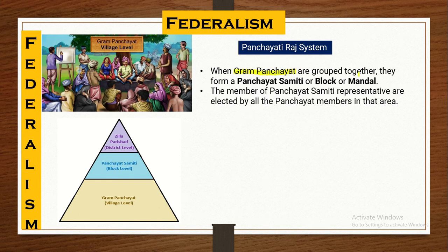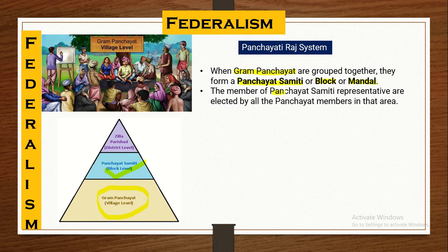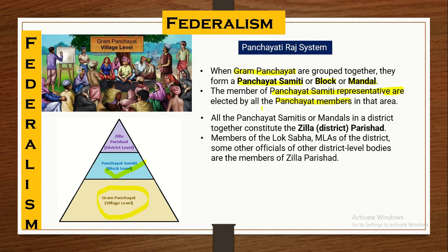The Gram Panchayats are grouped together to form the Panchayat Samiti at the block level, also known as the Mandal level. This is the second level in the three-tier pyramid — a group of Gram Panchayats forming a Panchayat Samiti. The members of the Panchayat Samiti are representatives elected by the Panchayat members in that area — all Panchayat members living in that particular Mandal.